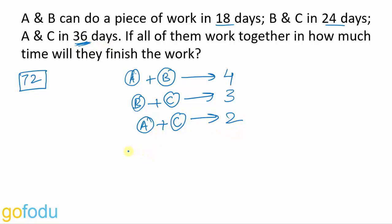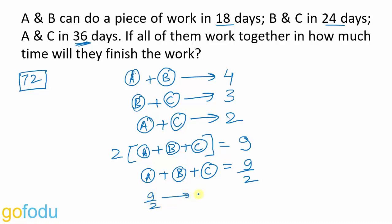Add all of them and we get 2 times A plus B plus C is equal to 4 plus 3 plus 2. 4 plus 3 plus 2 is 9. This gives us A plus B plus C as 9 by 2. So we have 9 by 2 units of work which gets done in 1 day when all 3 work together. So 72 units will get done in 1 upon 9 by 2 into 72. That will be equal to 2 upon 9 into 72, or 16 days.